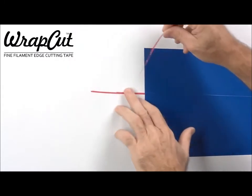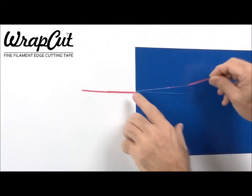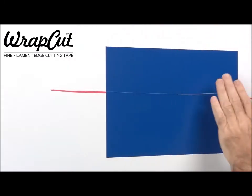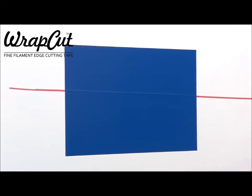Pull the bare filament up to the edge of the film and, while pressing the film down, give the filament a sharp tug to begin cutting. Then continue pulling the filament with a steady motion.